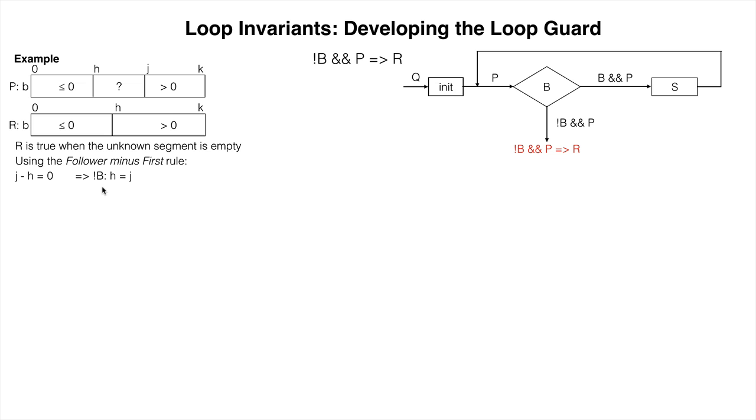So when this is the case, the loop should stop. This makes b: h is not equal to j.